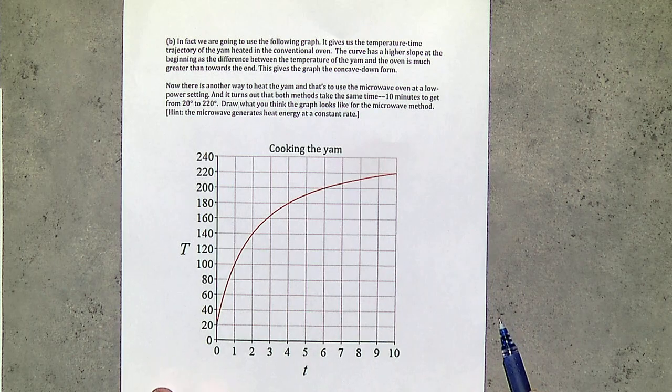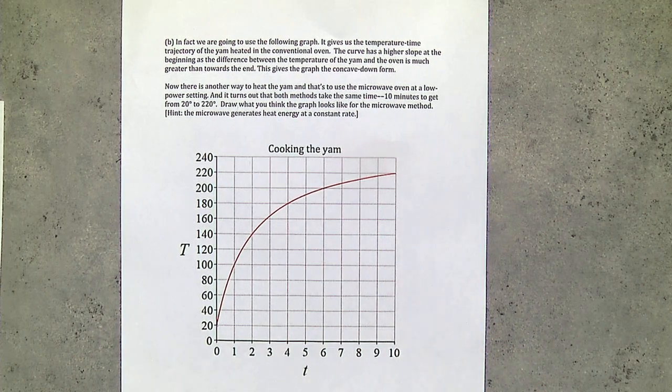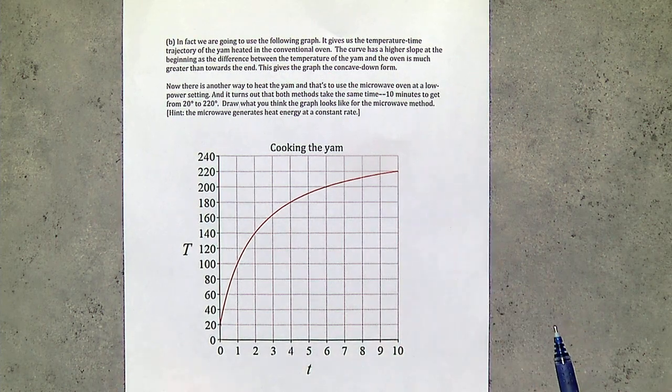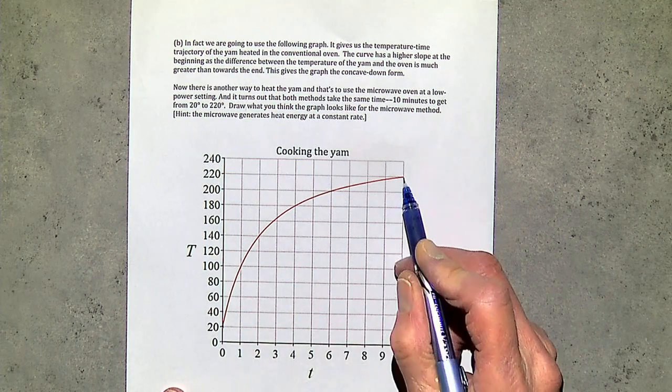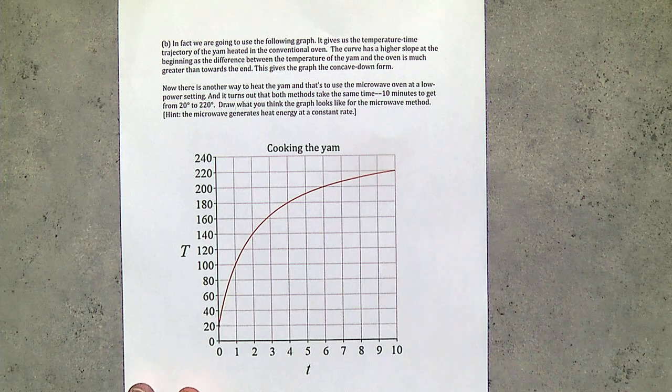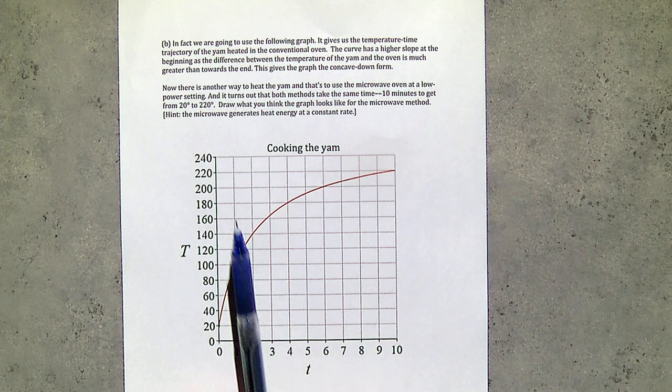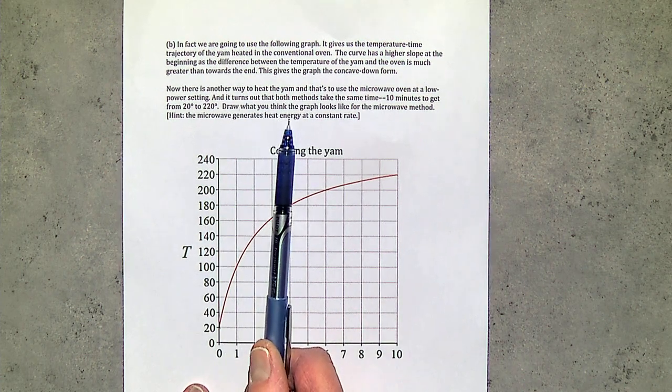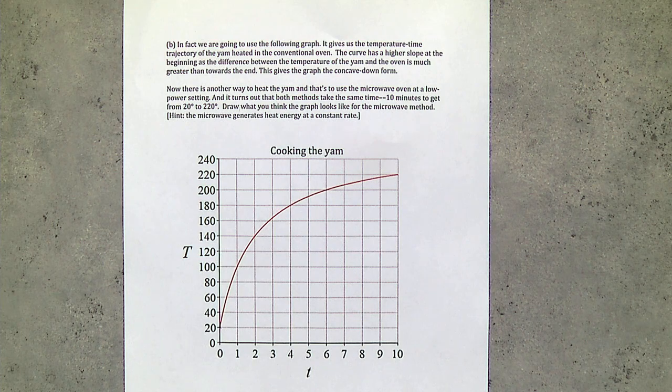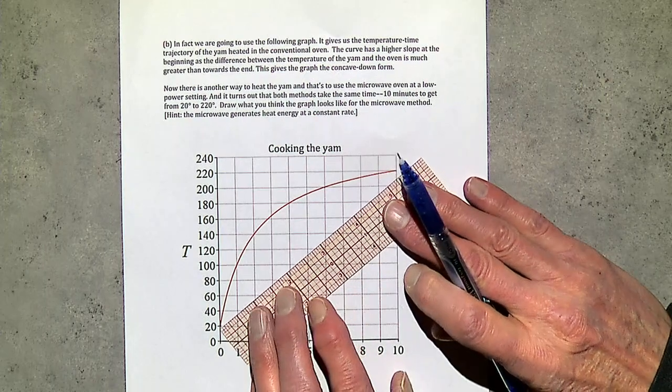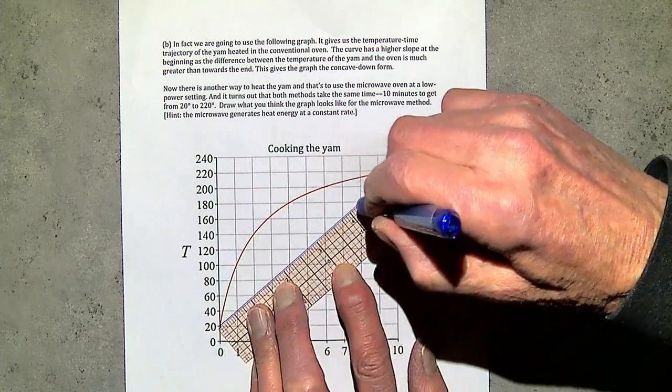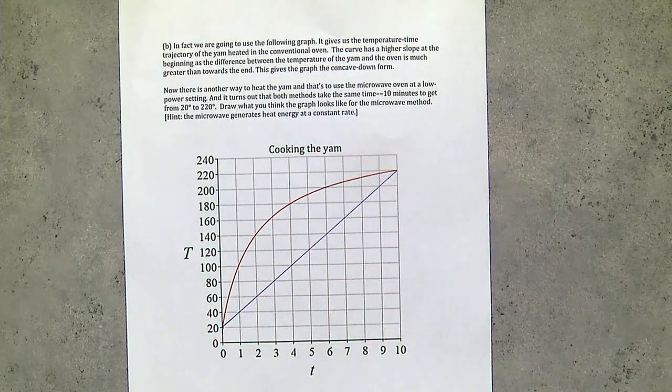This is the temperature time trajectory of the yam in a conventional oven. But we also have a microwave oven available. And it also can heat the yam from 20 degrees to 220 degrees. And it takes 10 minutes. So, it goes from here to here. But it's a different kind of oven. And my question to Roger was, what does the microwave graph look like? And I told him that the microwave actually generates heat energy from its power, its electrical power, at a constant rate. And so, Roger and Jack talked about that for a little bit. And they, at the end, they said, maybe it is one of these straight line functions. Because it seems to be that it's heating up at a constant rate. So, this is kind of what they drew. And they said, maybe that's the microwave graph. So it goes up there.